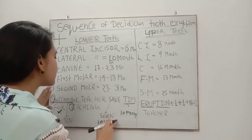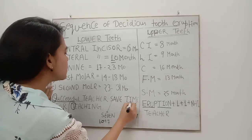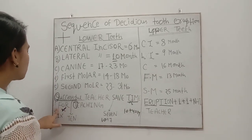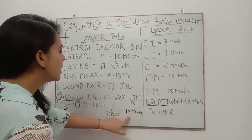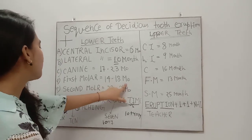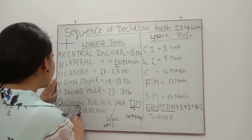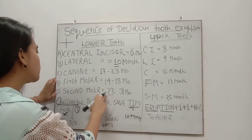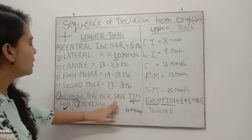For the first molar: write 10 again, and F for 'For' refers to 4 — 10 plus 4 equals 14 months. For the second molar, T for 'Teaching' refers to 23 months. So the full mnemonic 'Successful Teachers Save Time For Teaching' gives us: 6, 10, 17, 14, and 23 months for the lower deciduous teeth.